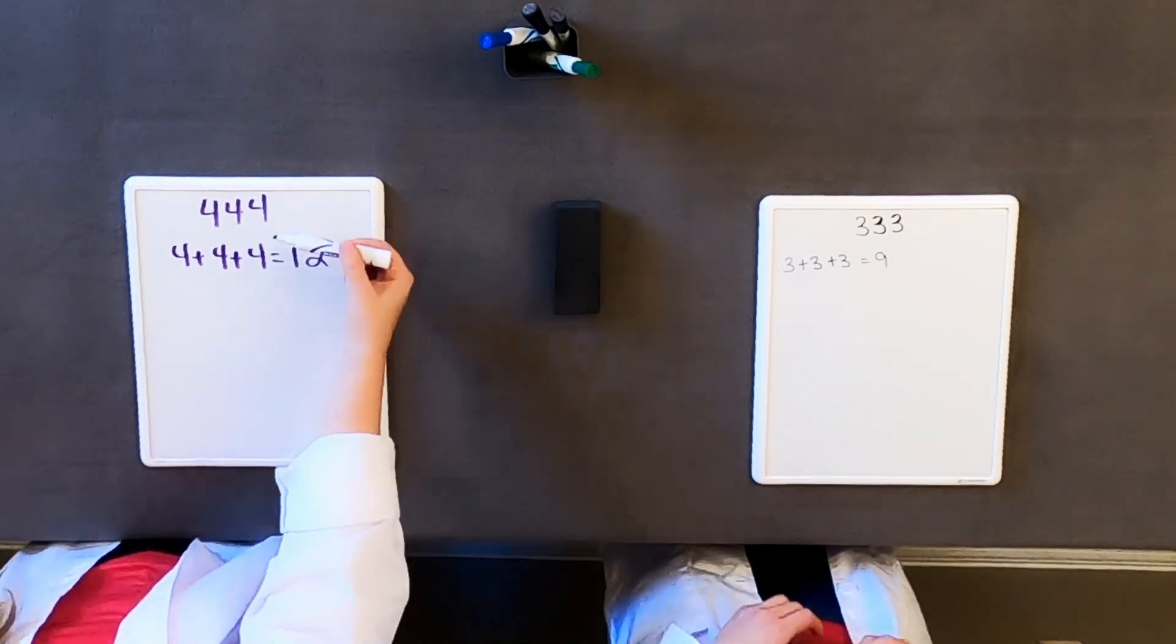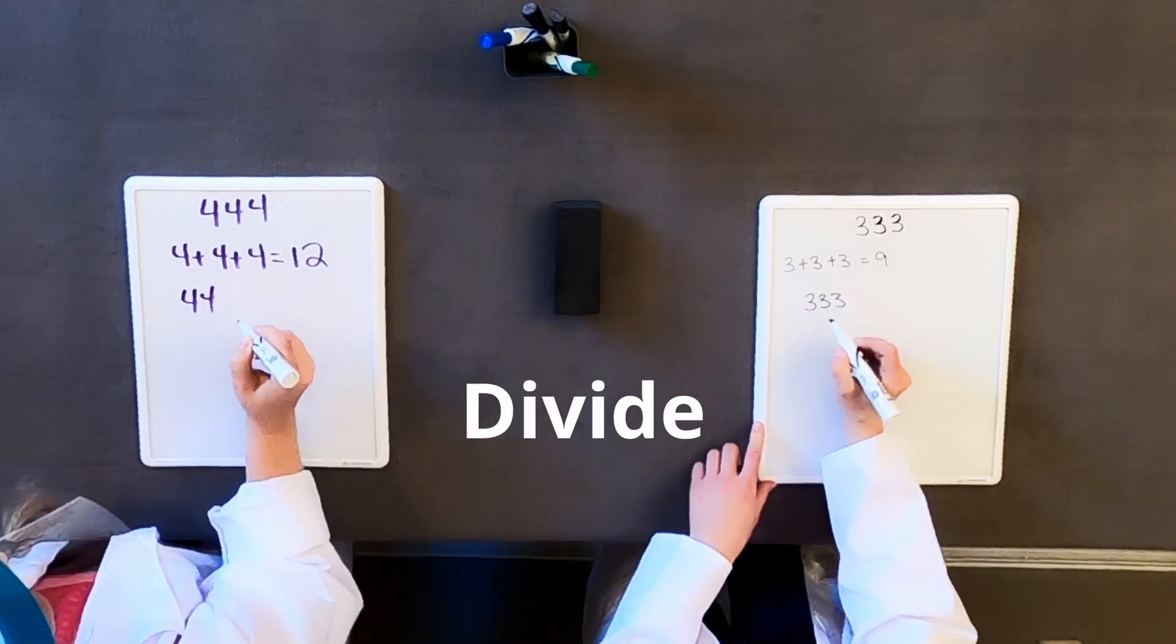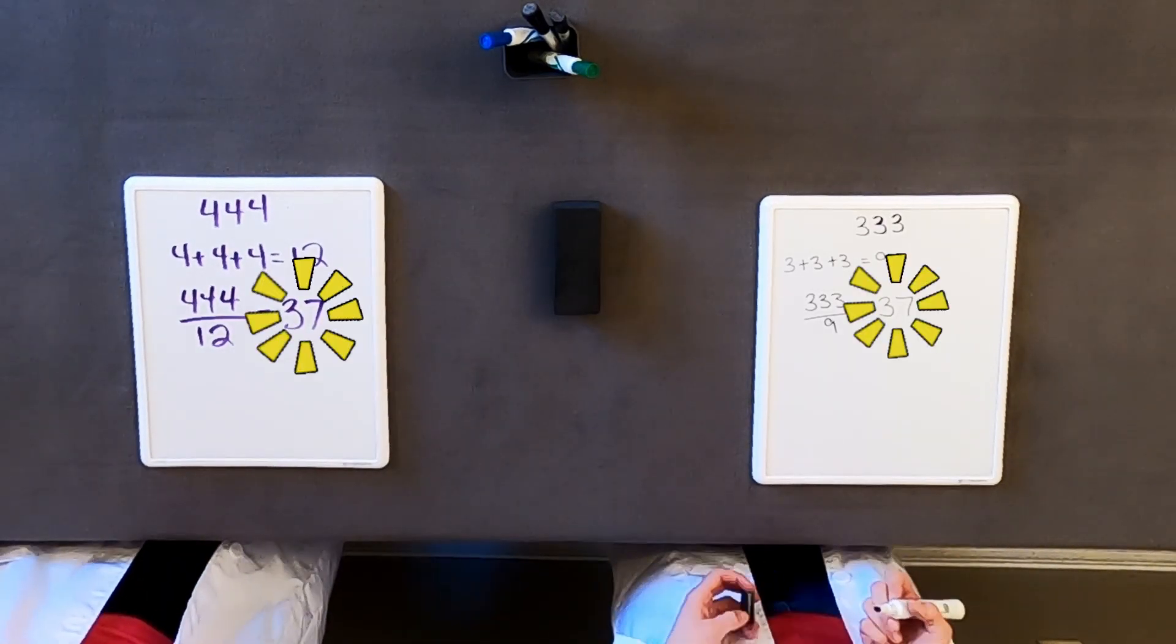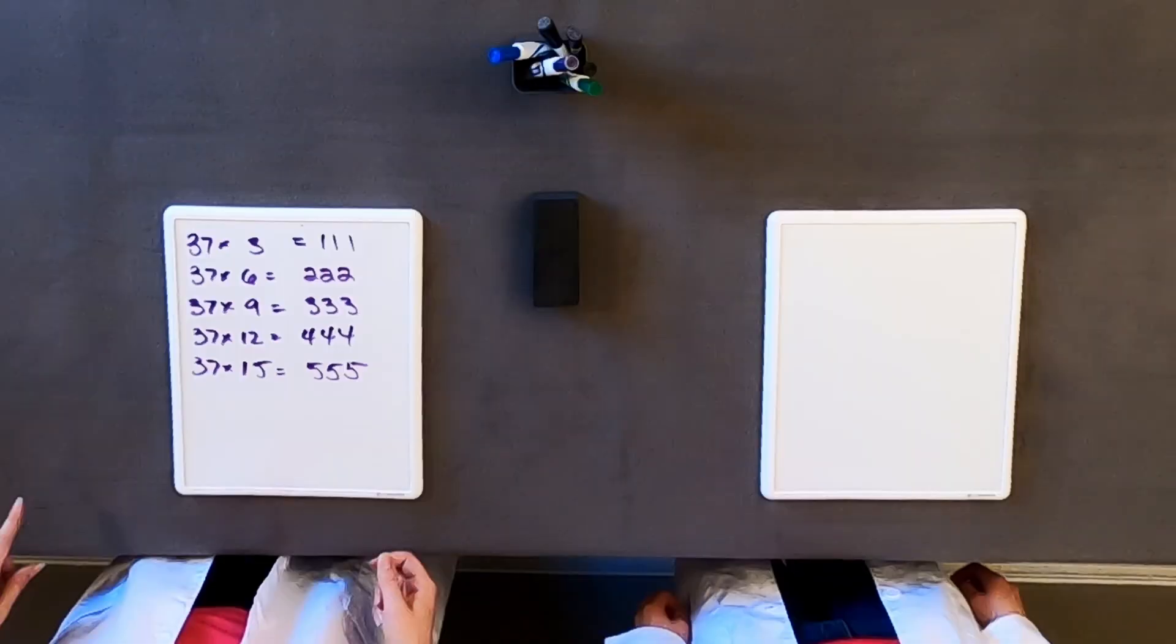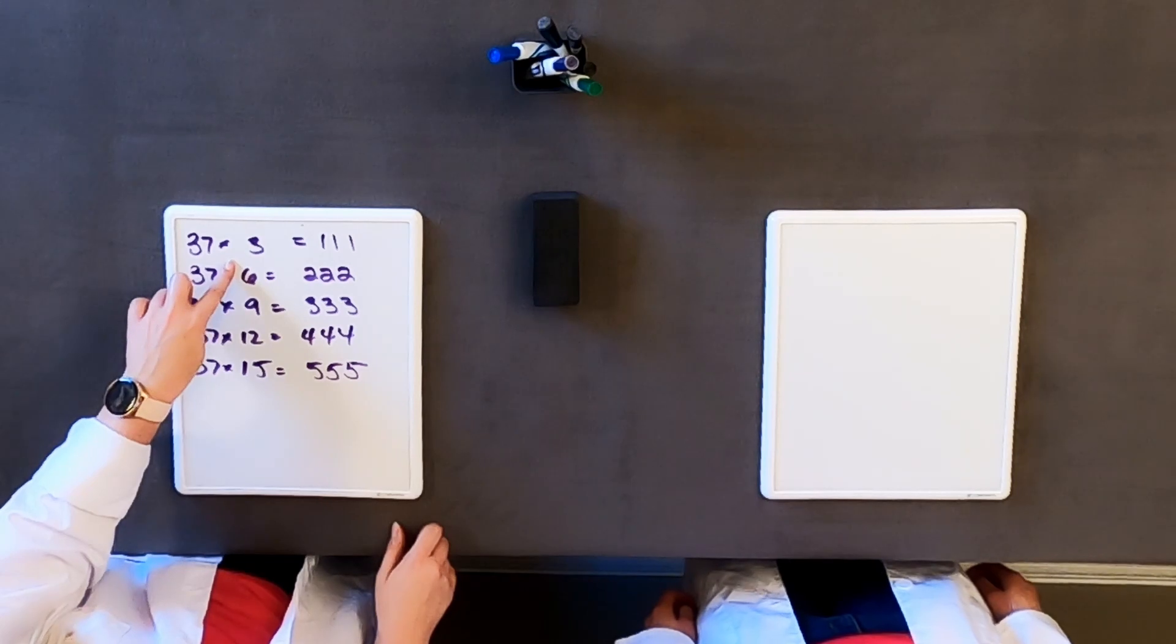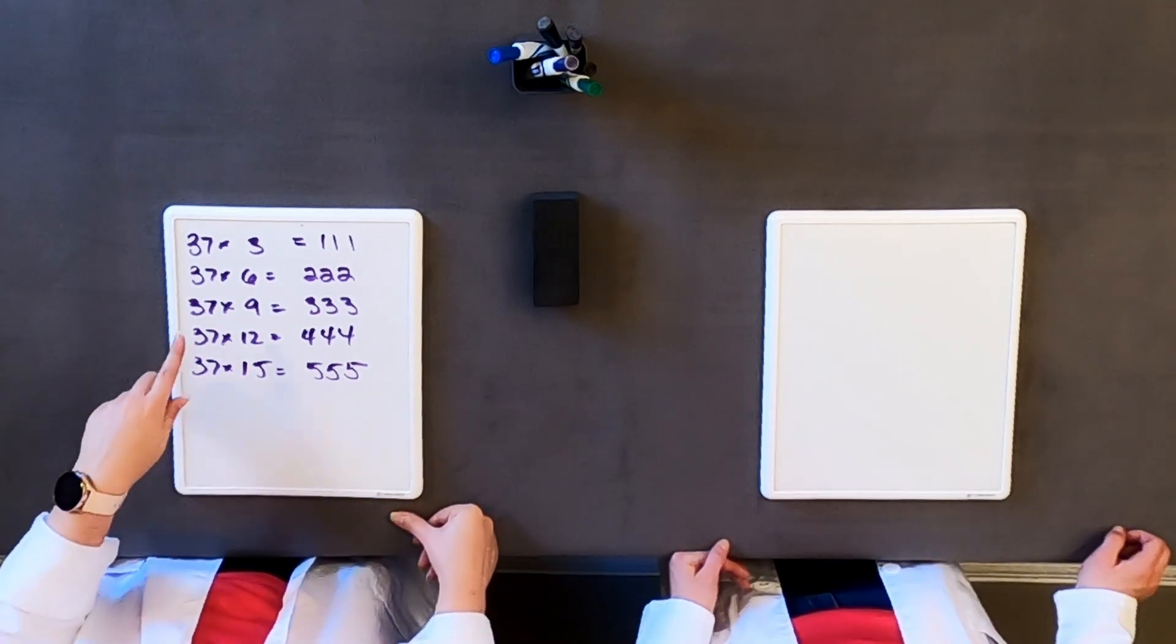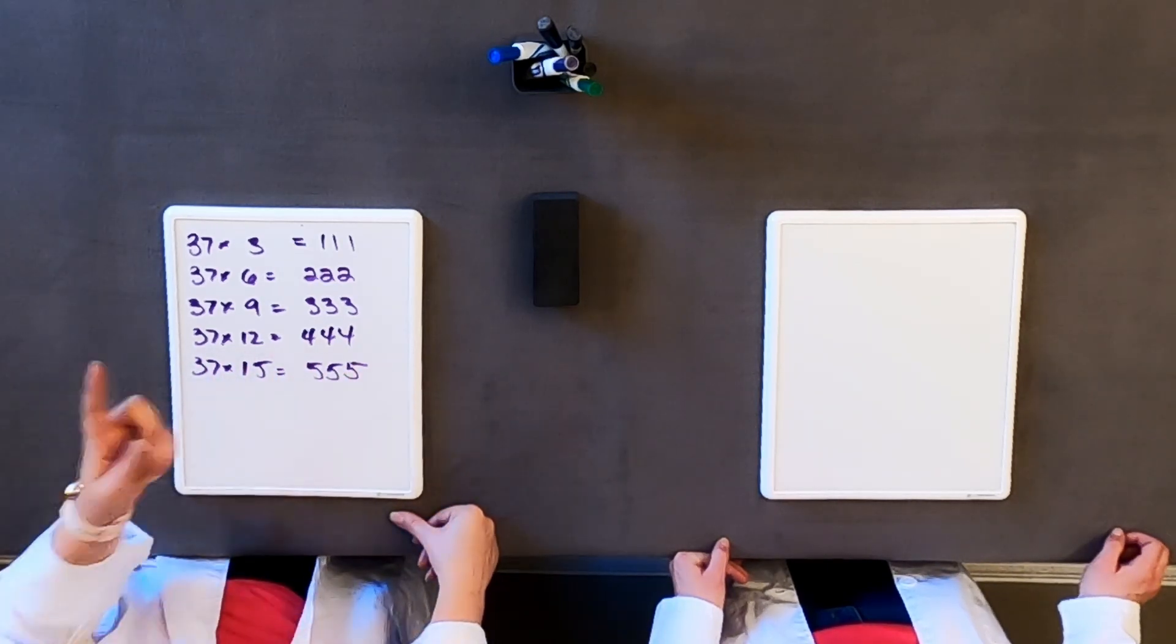And I get 12. And I get 9. Okay. So the next step is we're going to take our original number, and we're going to divide it by the number we just got. Okay. To get 111, we've got 37 times 3 equals 111. We've got 37 times 6 equals 222, and 37 times 9 equals 333, and 37 times 12 equals 444, and those were the ones that we did.